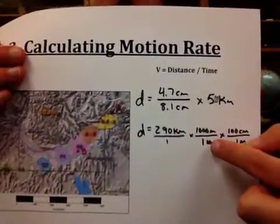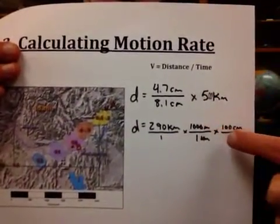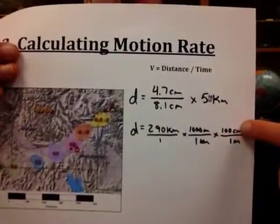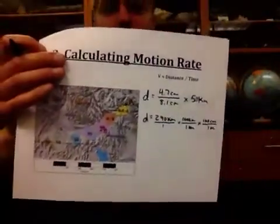Kilometers are on the top. To get rid of them, we put them on the bottom of the next fraction. There's 1,000 meters in every 1 kilometer. To get rid of the meters, we put it in the bottom of the next fraction. There's 100 centimeters in every meter. So our distance then will be left in centimeters.